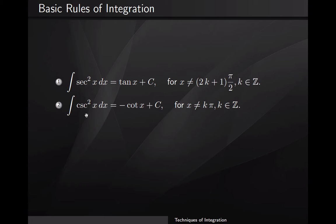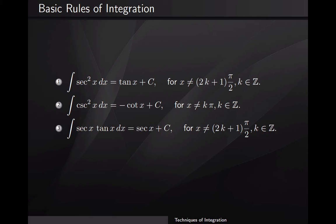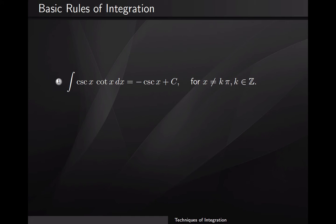The integral of cosecant squared of x dx is negative cotangent plus c, because the derivative of cotangent is negative cosecant squared. The restriction applies because cotangent equals cosine over sine, and sine is zero at certain angles. The integral of secant times tangent is secant of x plus c, because the derivative of secant is secant times tangent — excluding angles where cosine is zero. The integral of cosecant times cotangent is negative cosecant plus c, because the derivative of cosecant is negative cosecant times cotangent, with restriction for when sine equals zero.